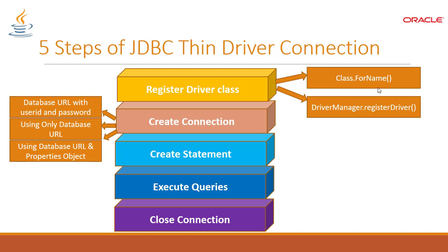The second step is to create a Connection object. Creating a connection can be implemented with three different approaches. You can create a connection between the database and a Java application using a database URL with username and password, using only the database URL, or using a database URL and a Properties object.